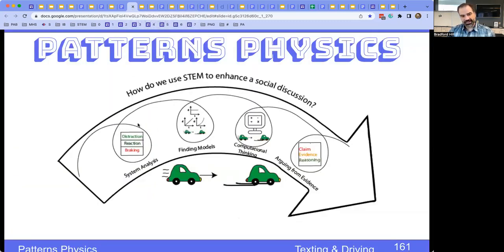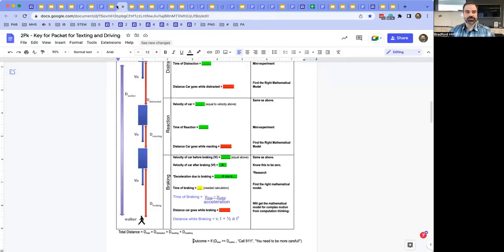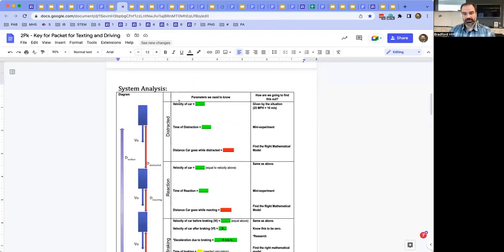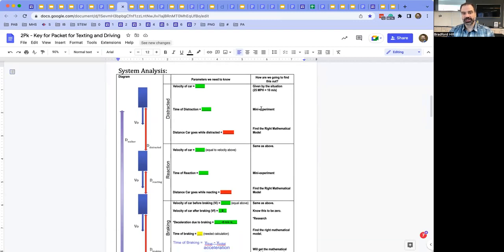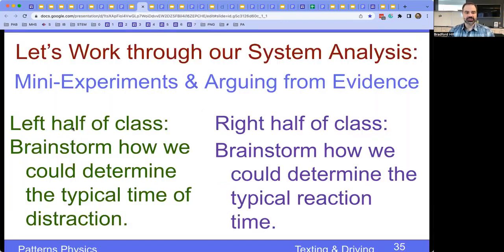All right. So here, that is our overview of the system analysis. And then we're about to move into the need for finding models. And let me just go back and peek. So where we have the velocity of the car, we got that from the video time of distraction, hey, we got to do a mini experiment and time of reaction, a mini experiment. So let's go and do that. And you know, it's just something real simple, like left half of the class, you figure out distraction, right half reaction. And we want this as open ended as possible. It's fun. They pull up, you know, video games, driving video games and try to like text at the same time.